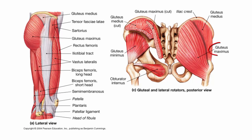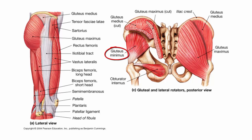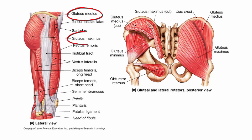In this picture, we see the gluteus maximus, which extends, abducts, and laterally rotates the thigh. The gluteus medius also adducts the thigh. If we dissect below the gluteus maximus and gluteus medius and move them out of the way, we see the gluteus minimus, which also adducts the thigh. Down here we can see the obturator internus, which helps to laterally rotate the thigh. Over to the left, again, we can see the gluteus medius and the gluteus maximus.